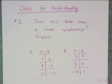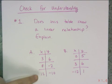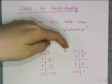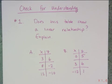We've come to the first check for understanding, just to see if you understand what's been going on so far in the lesson. So I want you to answer this question for these two tables. Does this table show a linear relationship? And then explain. So here's your first table. Contains the points 3, 6, 8, negative 2, 12, negative 10. The second table contains the points 0, 5, 3, 6, and negative 12, 1.